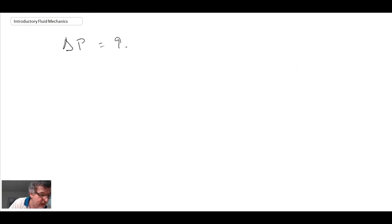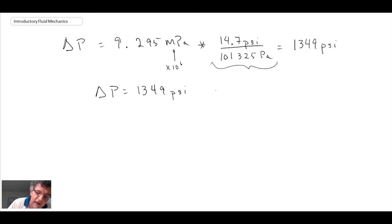The pressure drop is going to be 9.295 megapascals. They told us to compute this in PSI, and this is a conversion you should have memorized. You multiply this by 14.7 PSI divided by 101.325 pascals times 10 to the 6. When we do that, we get 1349 PSI. This is the conversion for atmospheric pressure in either pascals or PSI. So we get delta P equals 1349 PSI and the head loss due to friction in the pipe is 3114.8 feet.